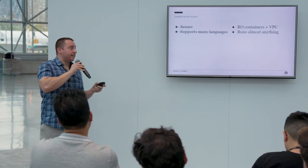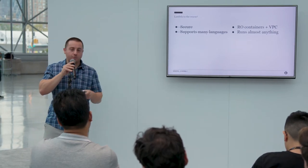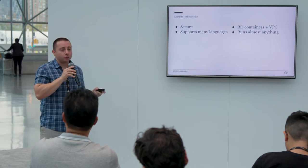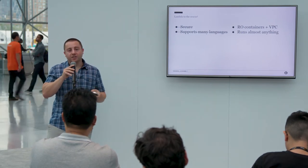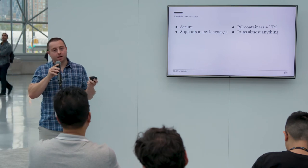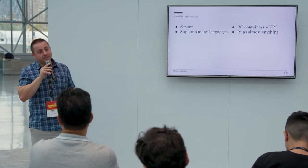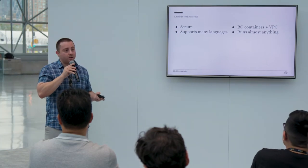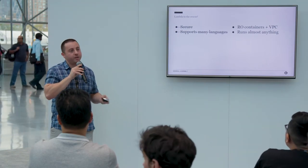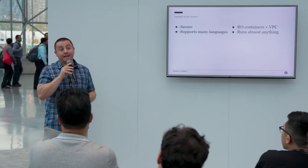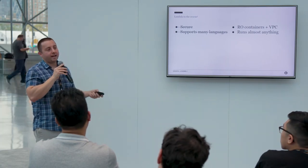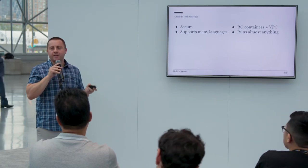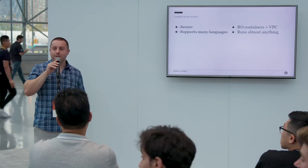Lambda officially supports a few languages right now and they have a couple more on their roadmap for this year. But essentially using a technique called shimming, you're able to execute any binary that you can compile on Linux. You package that binary with your service and you can run whatever you want — you can find examples of this online, you can run Go, Ruby, Swift, even though they're not natively supported. They're also planning on adding native support for Go, PHP, and Ruby this year.